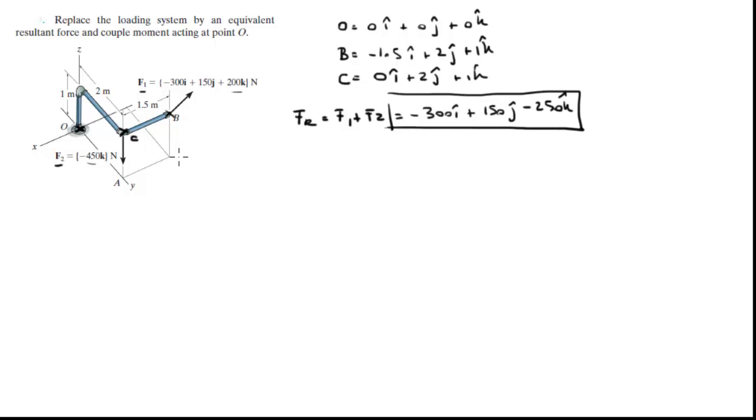Now what we got to find is the sum of the moments. There are two moments being created because there's two forces. So the moment that F2 creates is given by the cross product between vector OC cross F2. And the other moment created by F1 about O is given by OB cross F1. So these are the two moments that we need to find. Now O is at the origin, so OC is equal to C and OB is equal to B. So all we got to do is build our matrices.